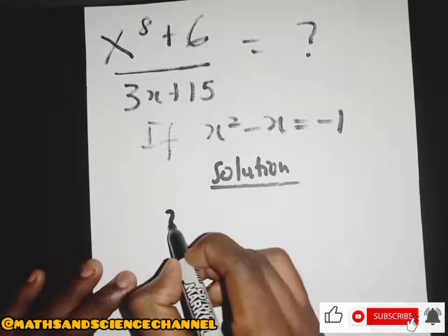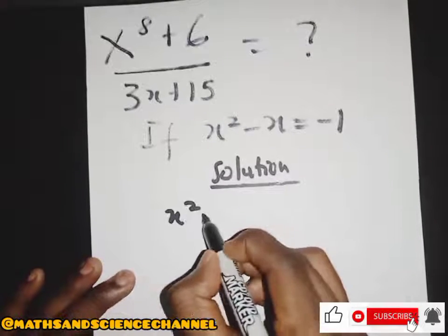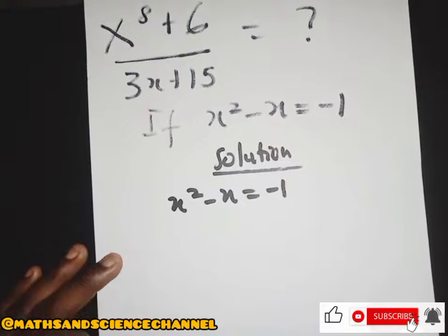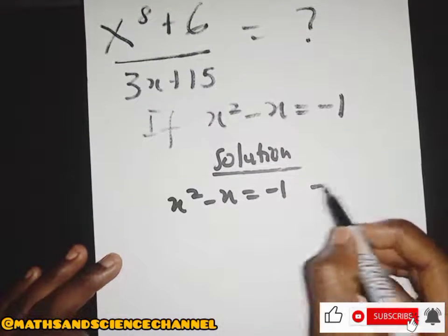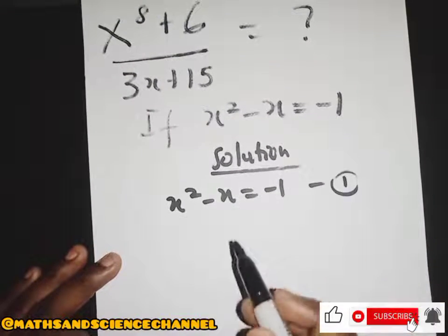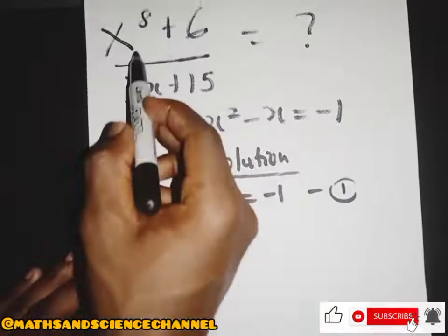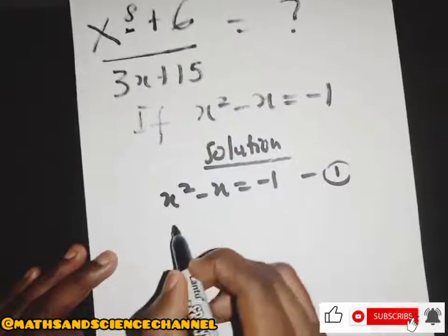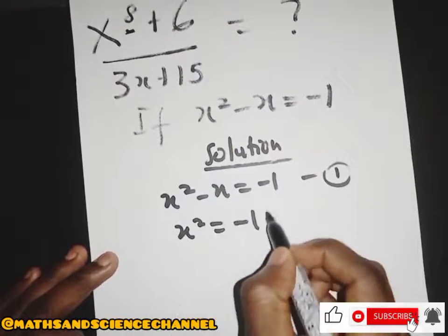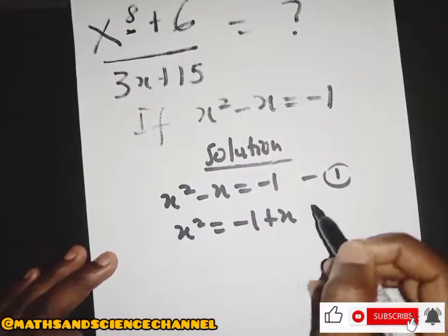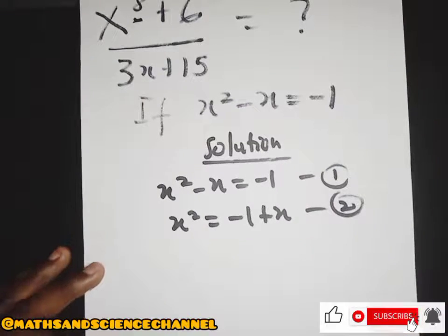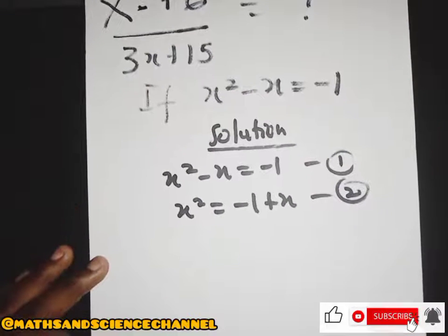Using the condition s squared minus x equals negative 1 — let's call this equation 1 — we can make s squared the subject: s squared equals x minus 1. Let's call this equation 2.